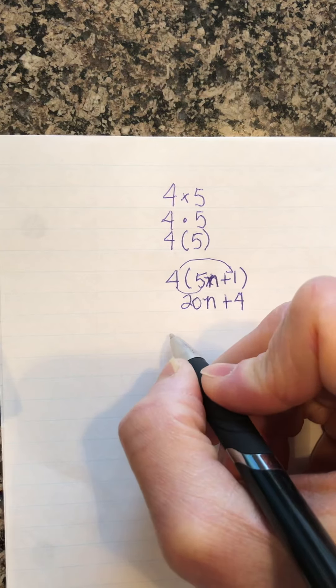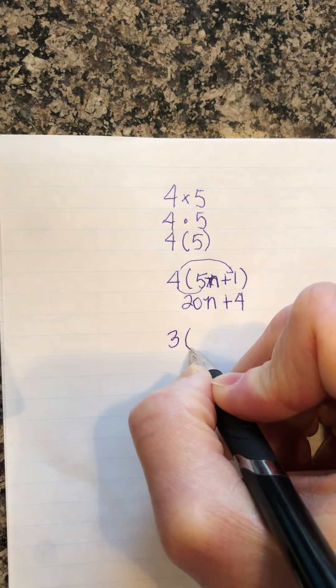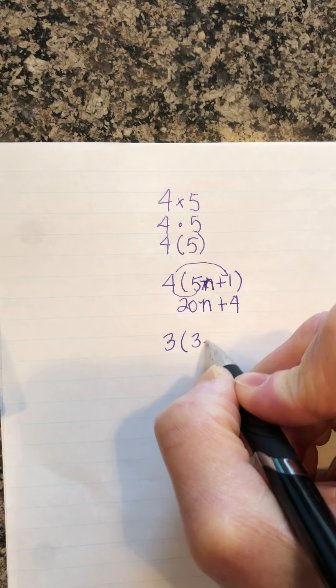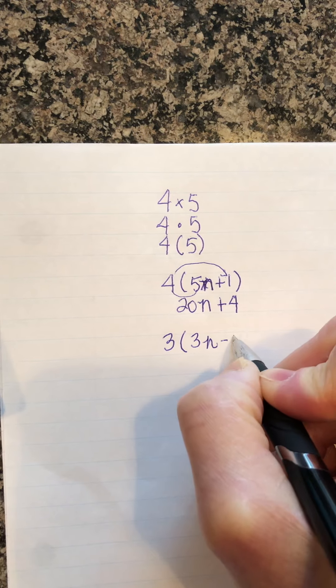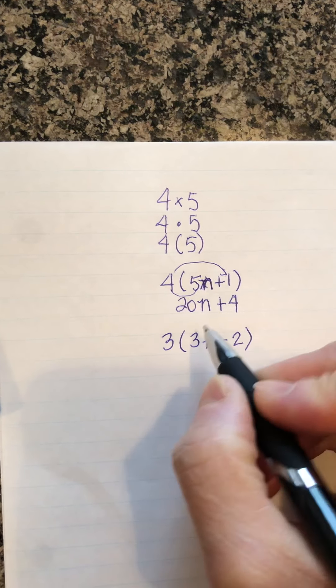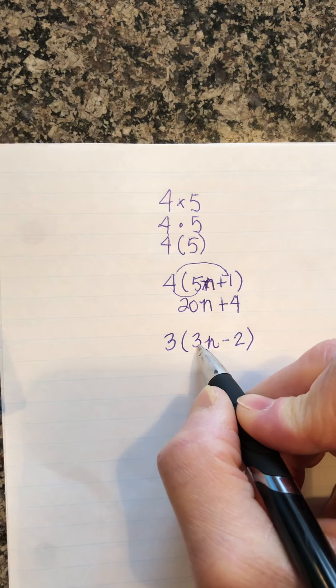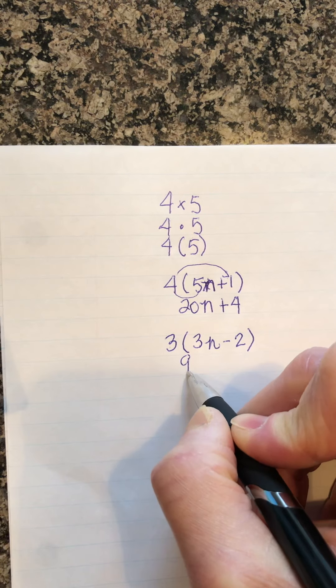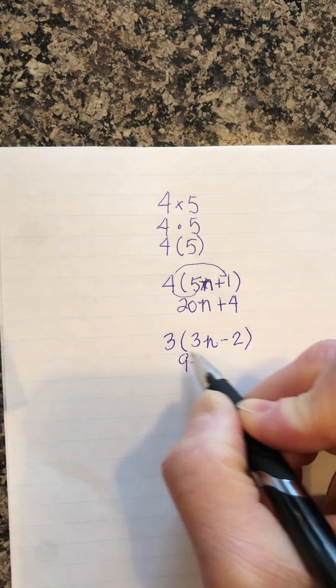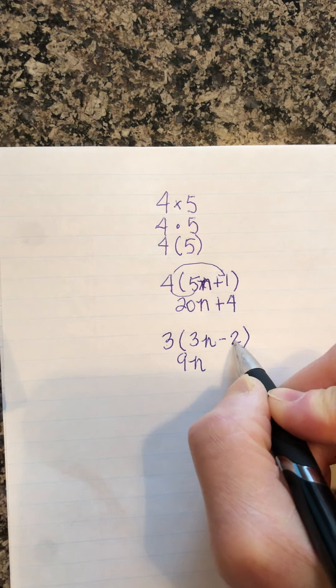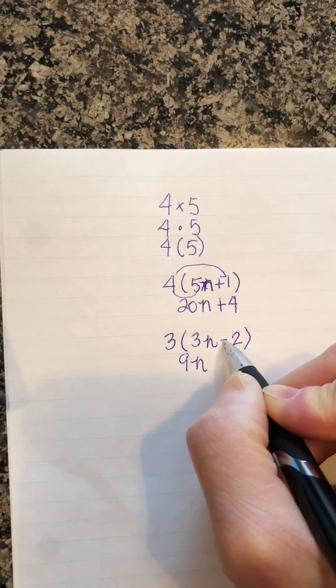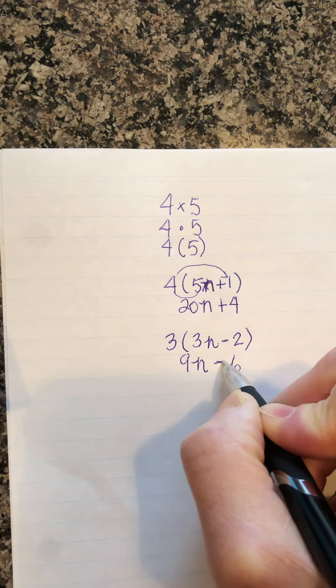If I had something with subtraction, it would be the same thing. I can have 3(3n minus 2). So I go 3 times 3 is 9, that's 9n. And then 3 times 2 is 6. But this time I've got to remember to put the subtraction in between.